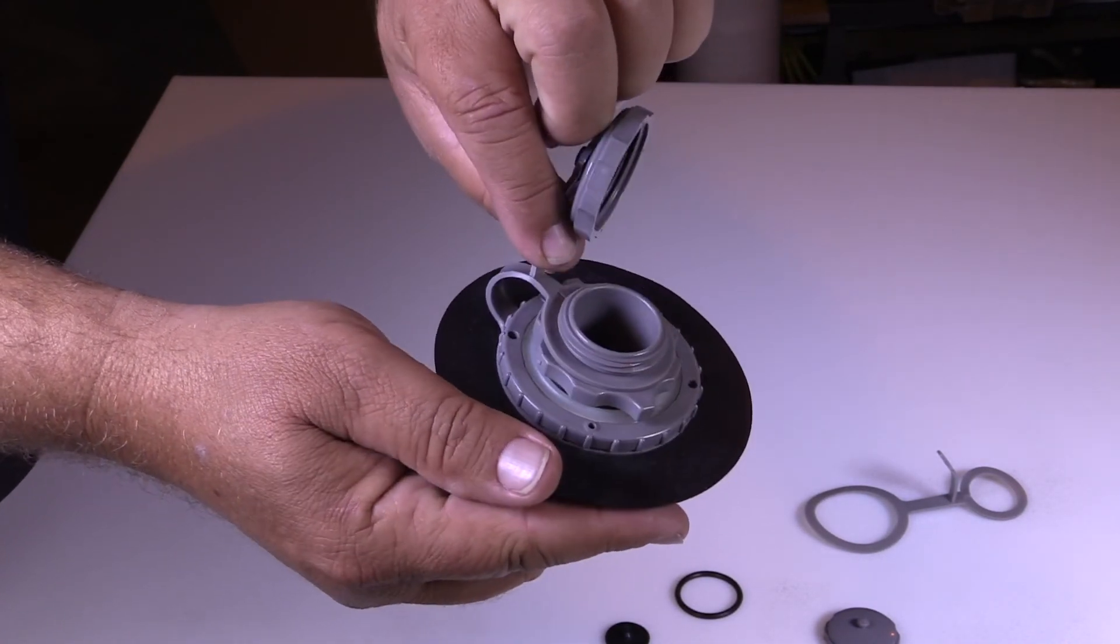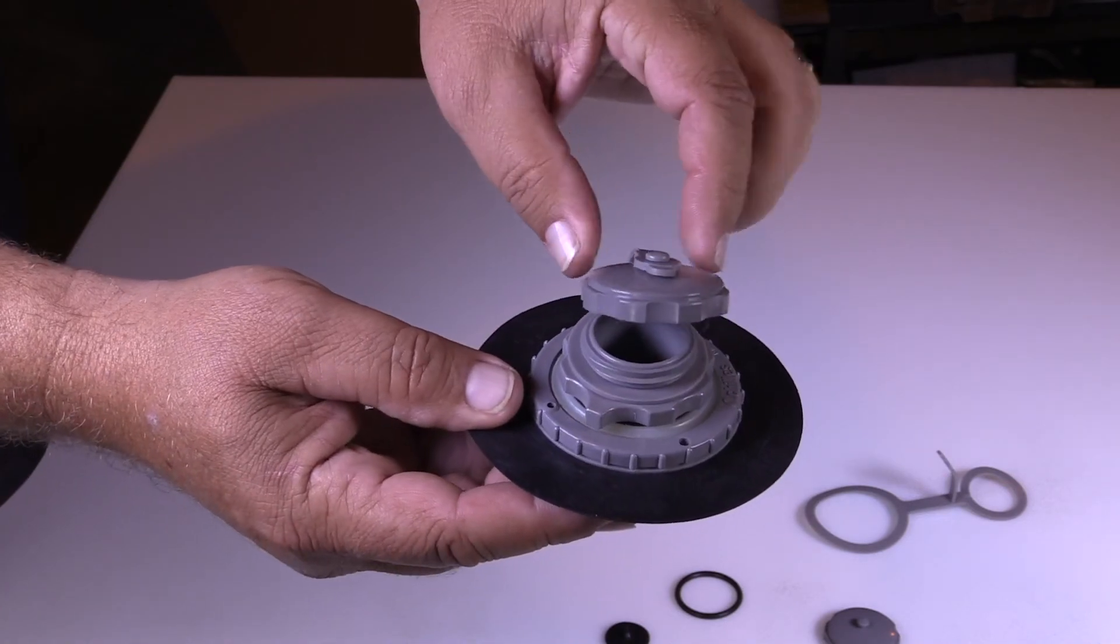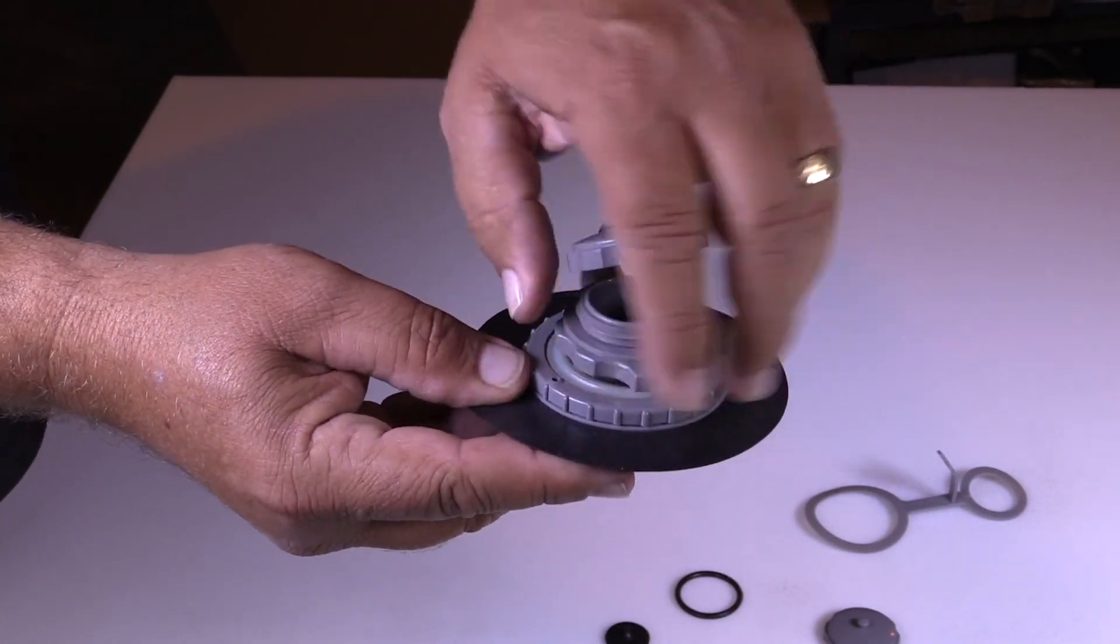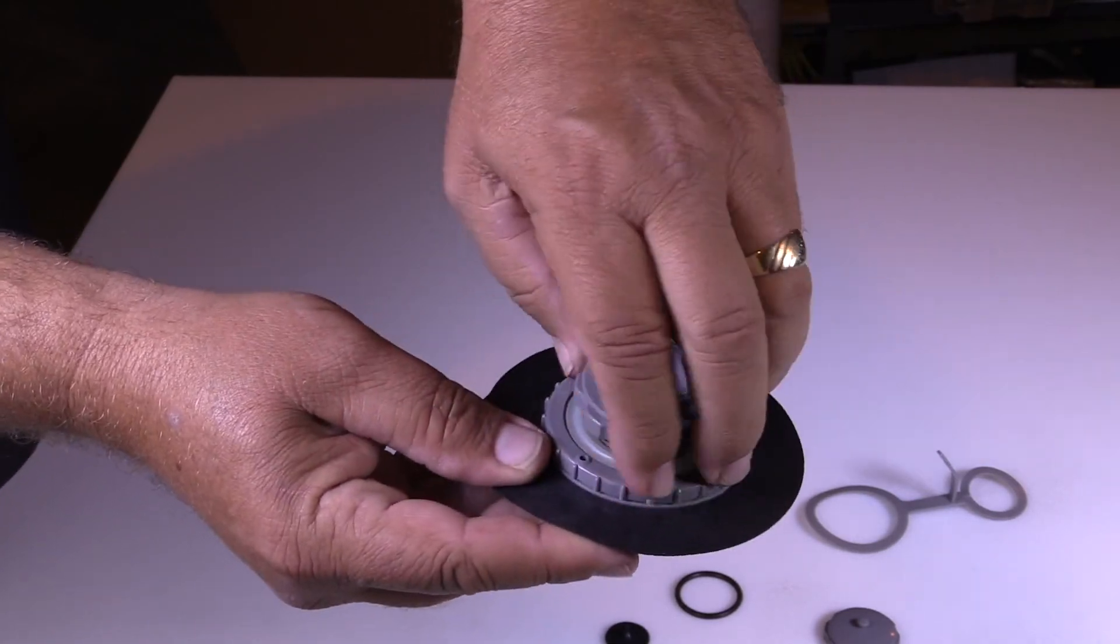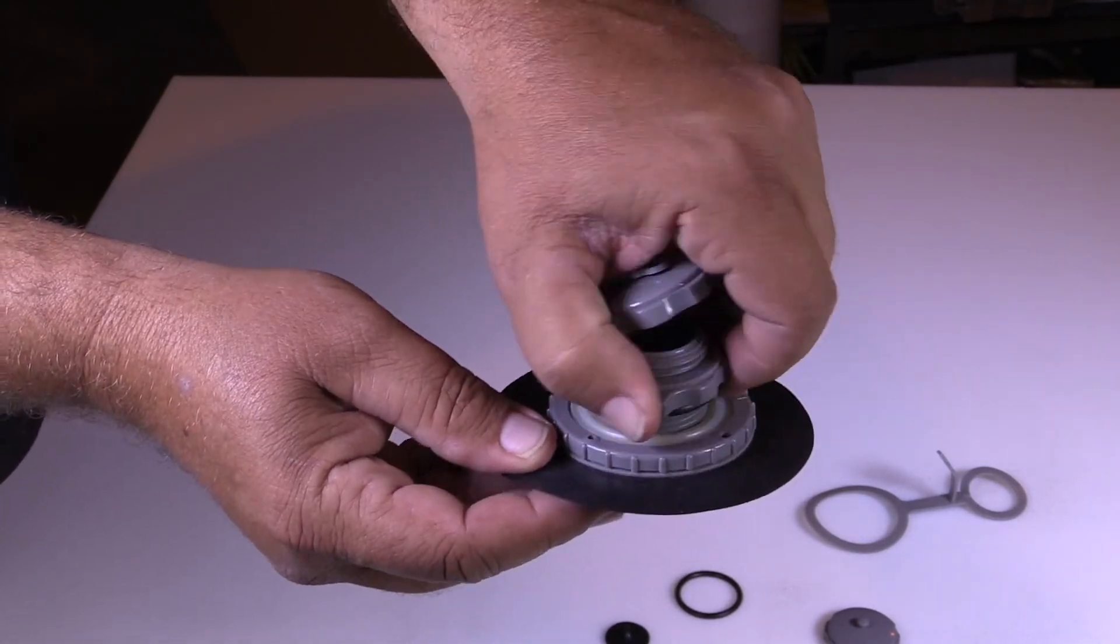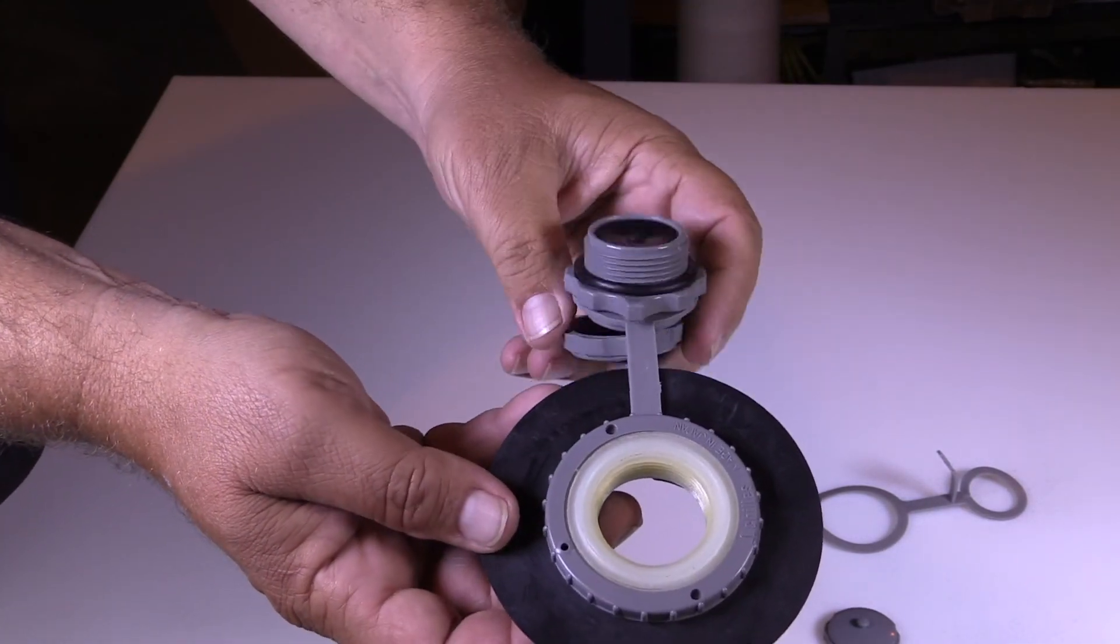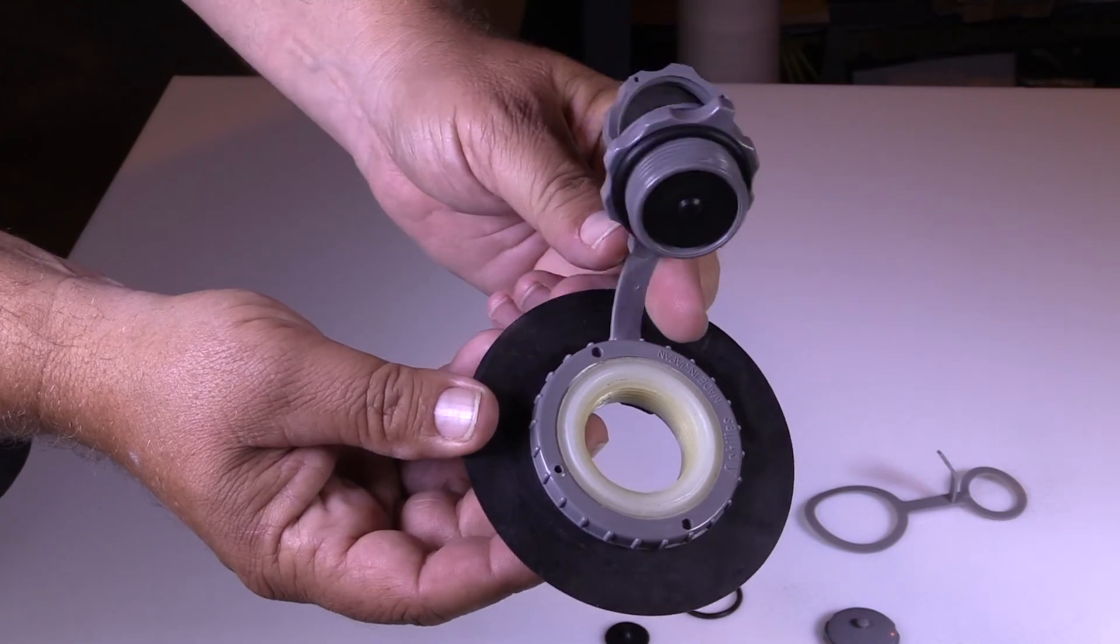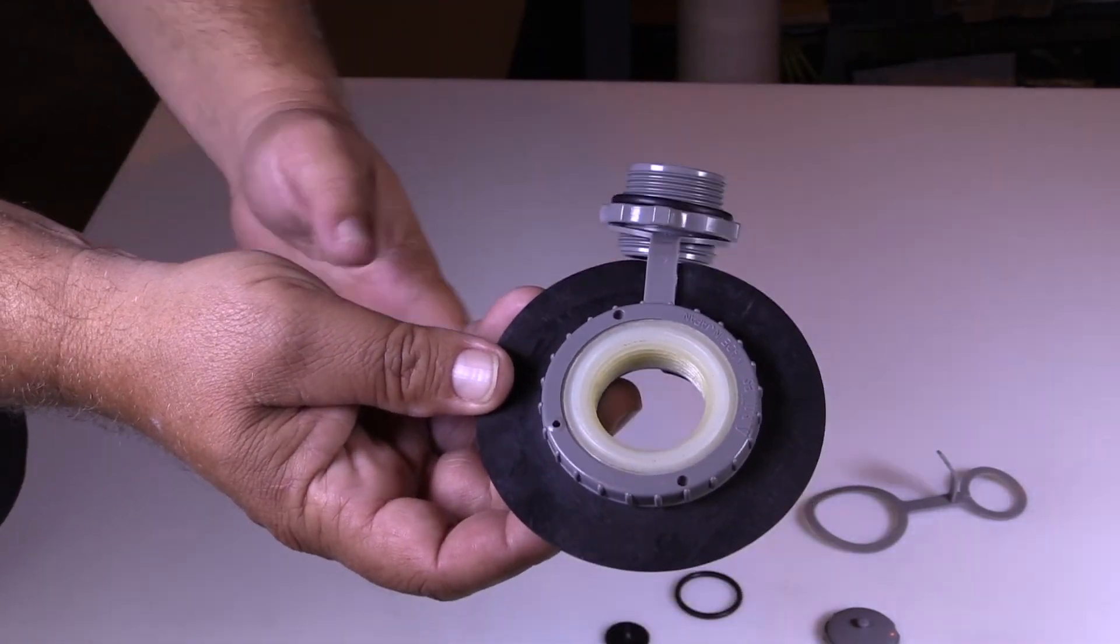Sometimes the straps get broke. They're not critical, but it keeps all the components together so you don't lose them when you unscrew the valve and deflate the boat. If you don't have the strap, you'll end up losing the individual pieces. So it holds it all together.